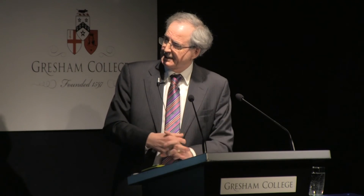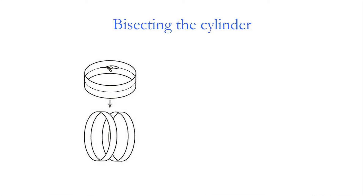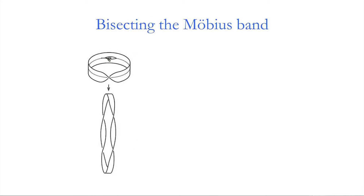First, as a reference, let's bisect a cylinder by cutting along a central curve. It's not hard to visualise that it falls apart into two pieces, each of which is a cylinder with half the width of the original.